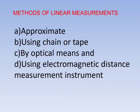Methods of Linear Measurements include approximate methods using chain or tape, by optical means, and using electromagnetic distance measurement instruments. The approximate methods are Pacing, Passivometer, Pedometer, Audometer, and Speedometer.